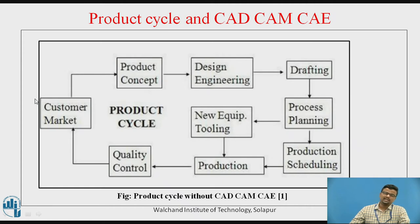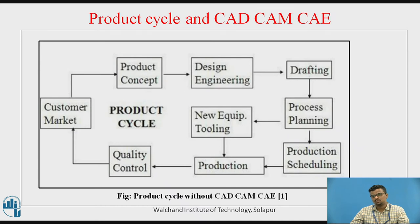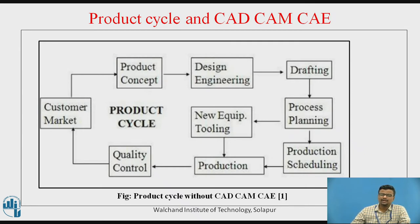If there is a requirement for a new product, it will consist of a provision for a new design process, a new manufacturing process, and a new route sheet in the case of process planning. Whenever we want to create a new product, the first step will be the product concept. The product concept consists of the definition of the problem — in simple words, a problem statement for the new design, new manufacturing process, and new product.